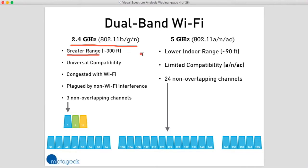That range depends on a lot of things: the equipment you're using, the environment, how much stuff is around you, even whether it's raining outside can affect range. So about 300 feet is what most vendors will say you'll approximately get with most 2.4 gigahertz wireless gear.